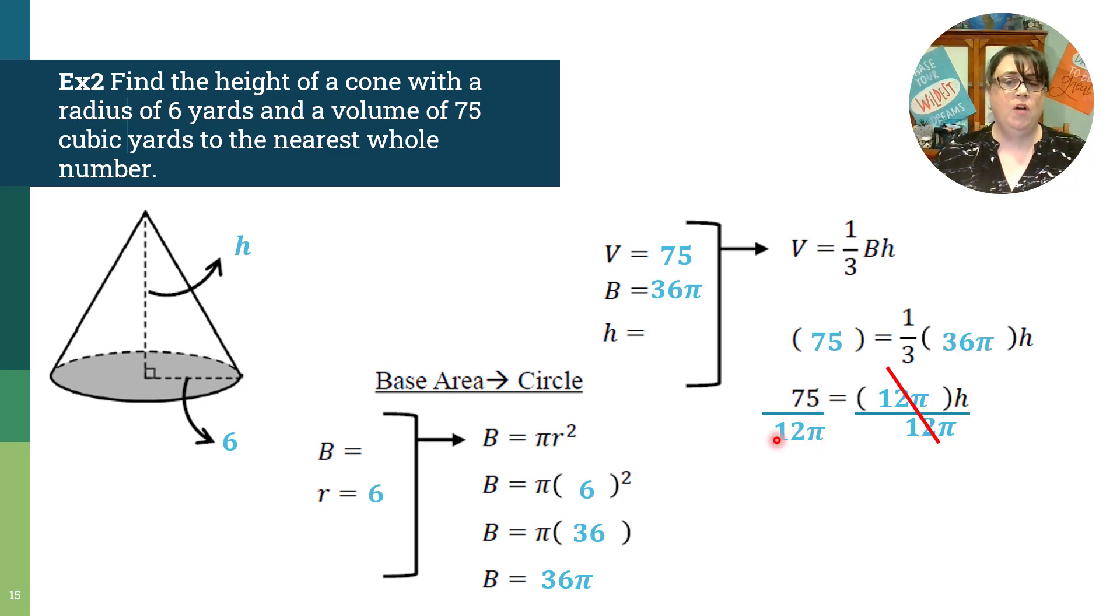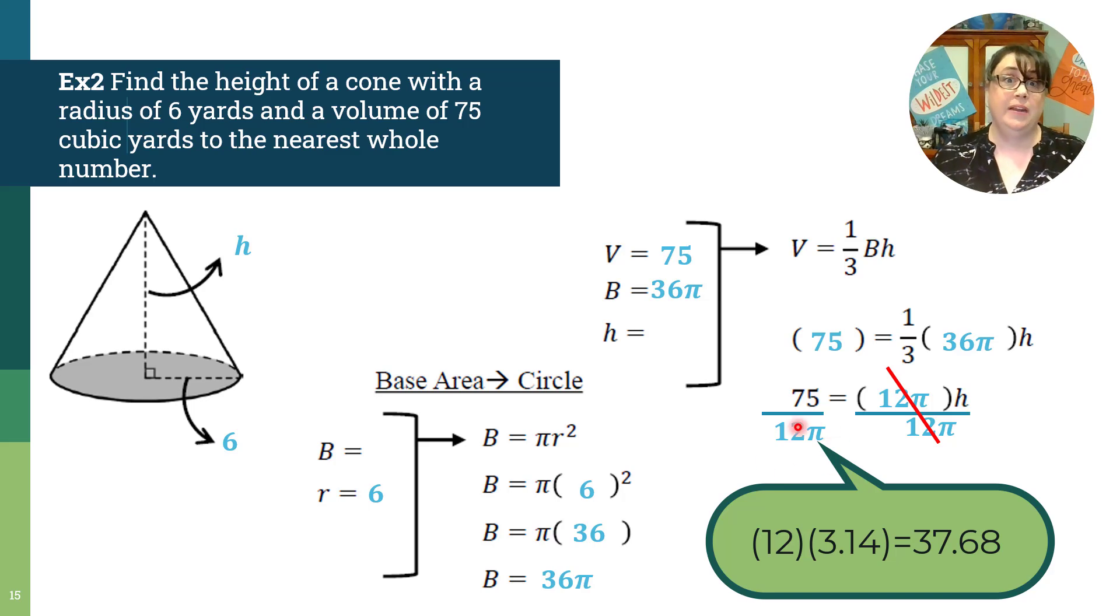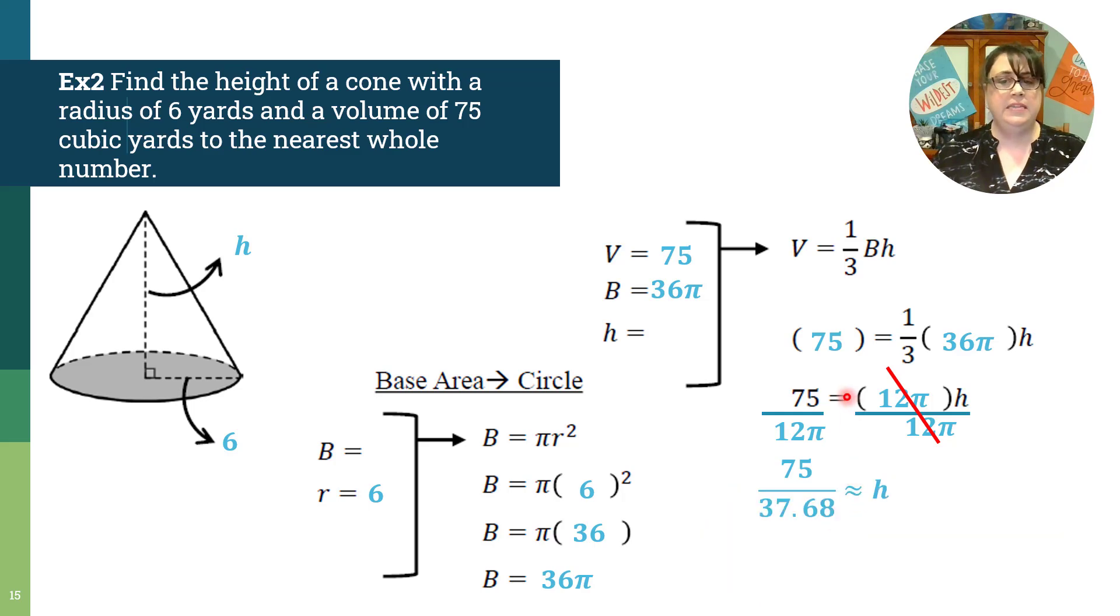So I'm going to go ahead and take my 12 pi and turn it into the decimal that it is. So 12 times 3.14 is about 37.68. And do you see how I went from an equal sign to approximate? That's because now we're into approximate waters. So 75 divided by 37.68 is about two yards. So our height is about two yards. Why is it not yards squared? Because we're talking about a linear length, like what a yardstick measures. So the yardsticks are just regular yards. So this would be about two yards.